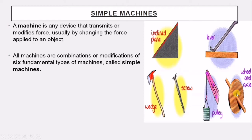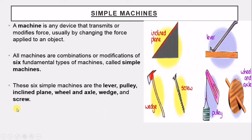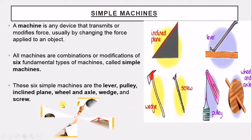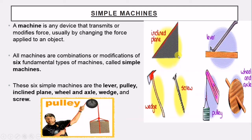The six fundamental types of machines are called simple machines, and all other machines around you are combinations of these. The six simple machines are: lever, pulley, inclined plane, wheel and axle, wedge, and screw.